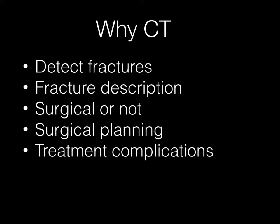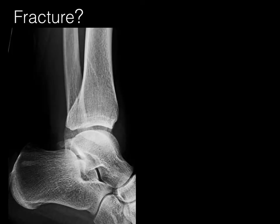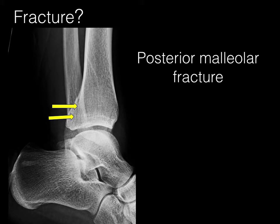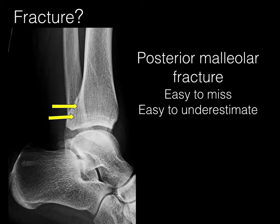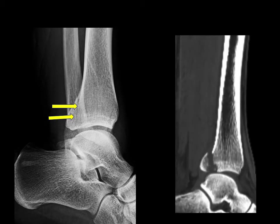Lateral view of the ankle showing a fracture — there is a posterior malleolar fracture. Posterior malleolar fractures are easy to miss radiographically and they're also easy to underestimate. Here is an example of a CT which more clearly shows that the fracture is displaced.